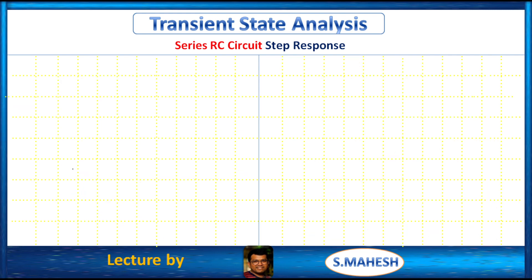Therefore the equation becomes what? V by S equals R into I of s plus 1 by C, I of s by S.